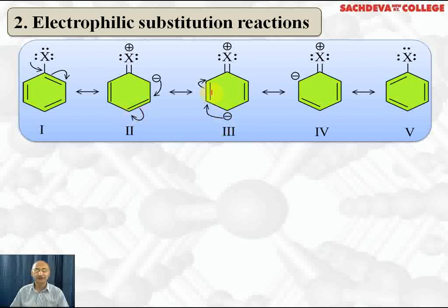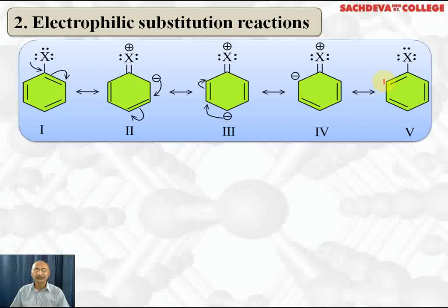This negative charge at para position forms as the pi electrons shift to para position. These double bonds are parallel. This negative charge then takes part in double bond formation and pi electrons shift to the ortho position. Ultimately the pair of electrons goes back to halogen and the positive charge is removed. We get resonating structures of halobenzene with alternate double bonds and halogen retaining all three lone pairs of electrons.